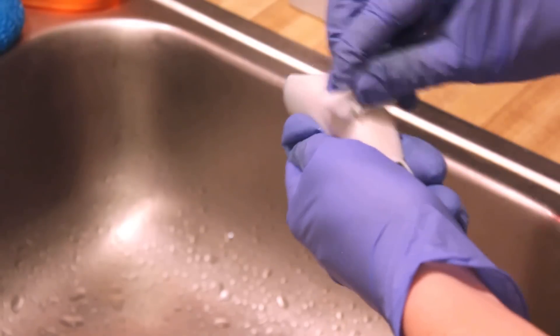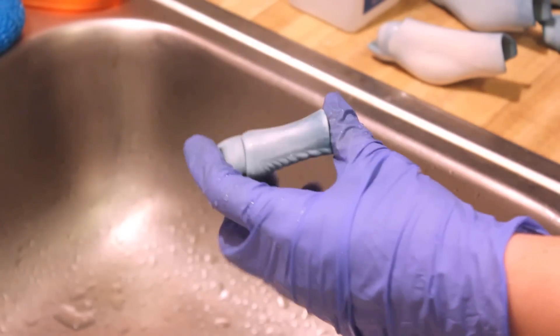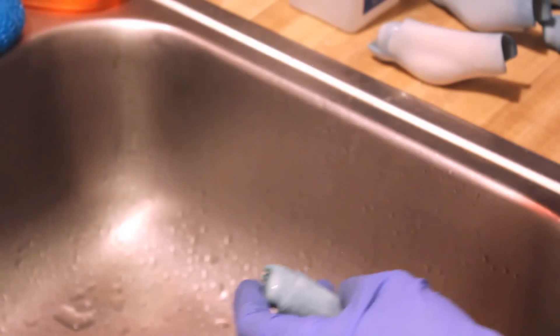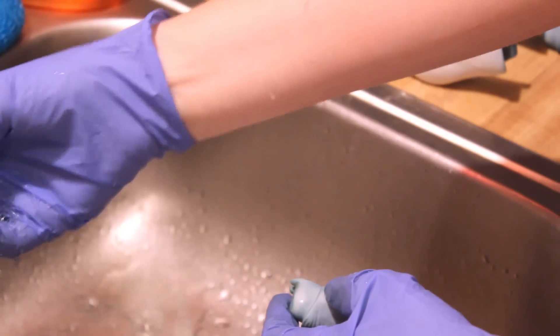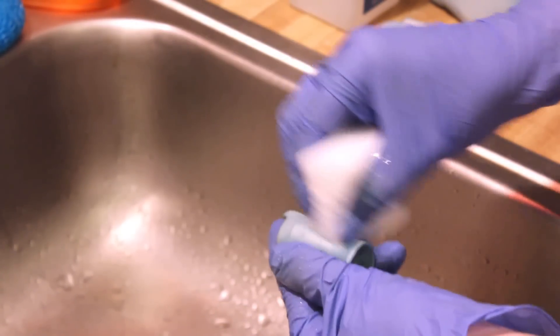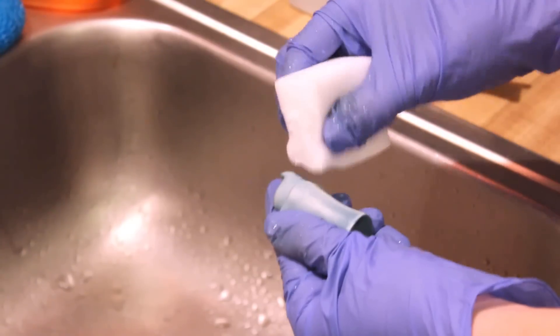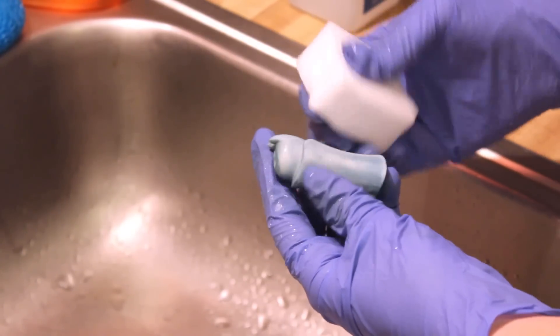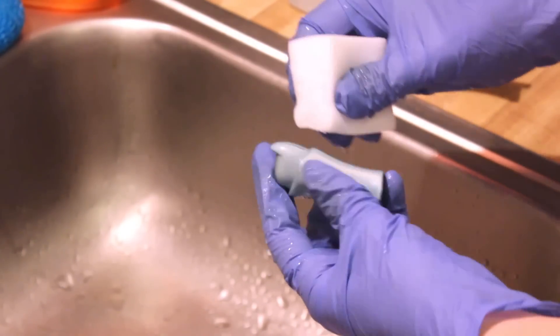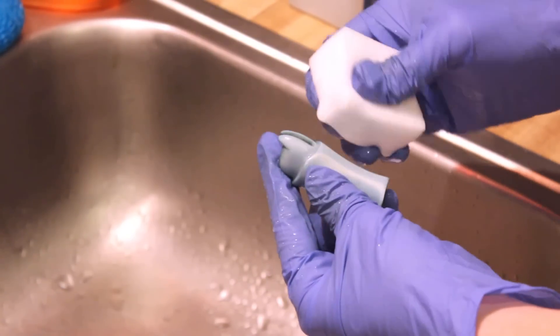So I guess the next thing to do is to move onto the abrasives. I start with the magic eraser. You don't have to use these wet, but I cannot stand the way these sponges feel when they're dry. Oh my gosh. Trying to scrub something with a dry magic eraser gives me goosebumps like I was running my fingernails down a chalkboard. I hate it! Melamine sponges are a micro-abrasive, like a super fine sandpaper.